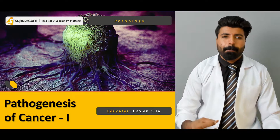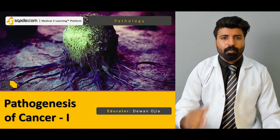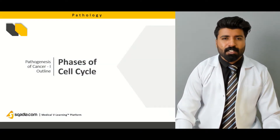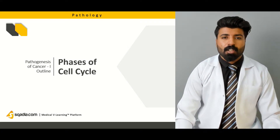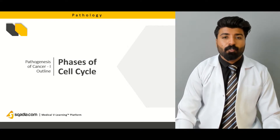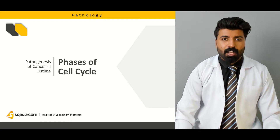We're going to start at a very basic level and build from there. First of all we're going to talk about phases of the cell cycle, which includes G1, S phase, G2 phase, and M phase. We're going to talk about which cells of the body go into G0 phase, which is a resting phase for the rest of their lifetime.